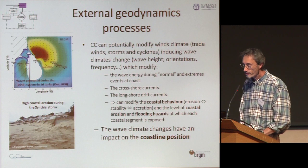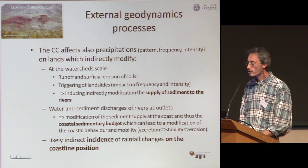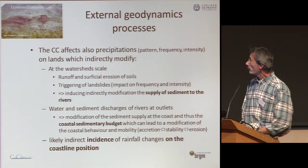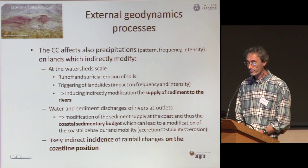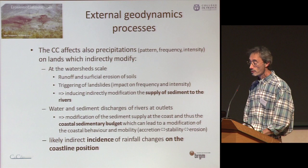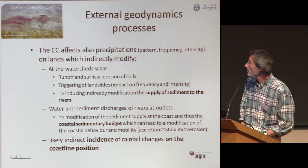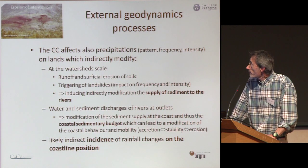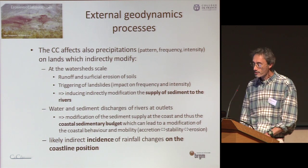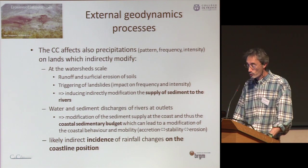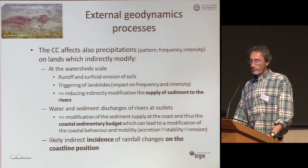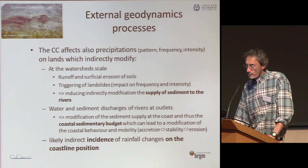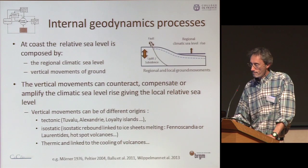Wave climate change has an impact on coastline position. Regarding external geodynamic processes, climate change also affects precipitation — rainfall pattern, frequency, and intensity on land — which indirectly modifies, at the watershed scale, runoff and surface erosion of soil, triggering landslides with impact on their frequency and intensity. This induces indirectly a modification of the supply of sediment to rivers, and sediment discharge at river outlets is also changed, modifying the sedimentary budget at the coast, which can lead to changes in coastal behavior: accretion, stability, or erosion.